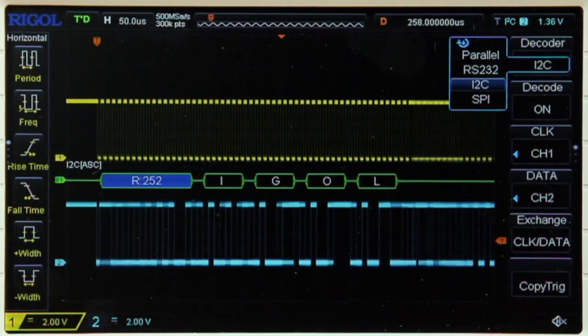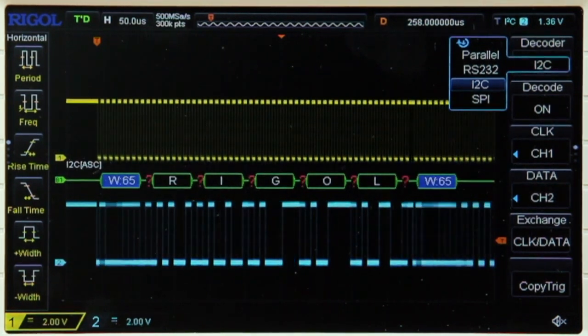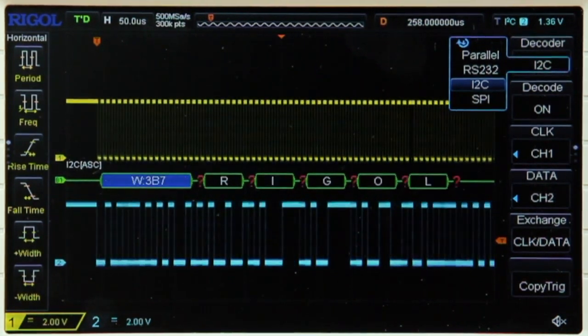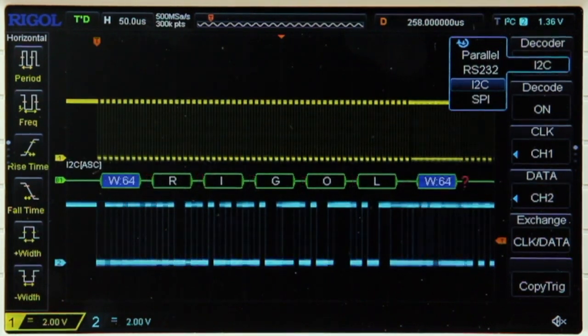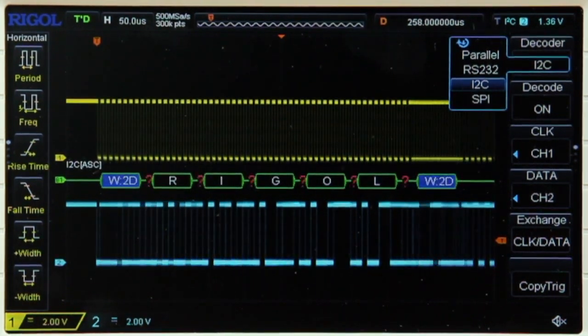The DS1202Z-E performs serial decode on RS232, I2C, and SPI signals right out of the box, allowing users to quickly and easily decode serial data.